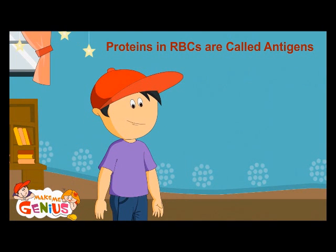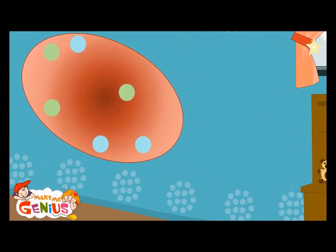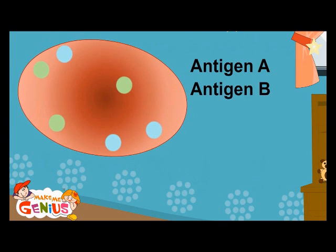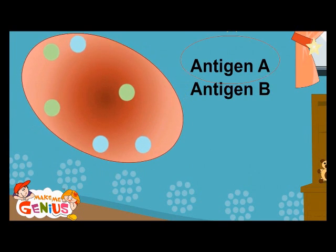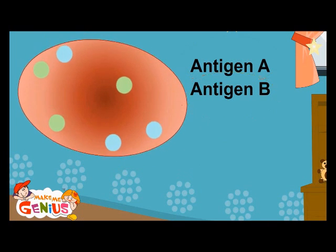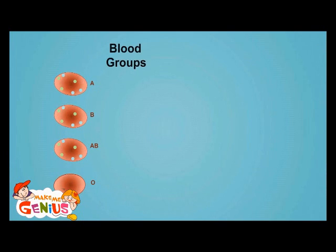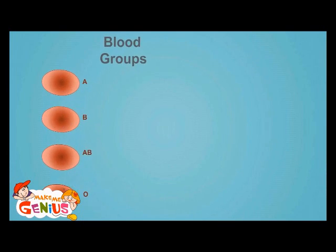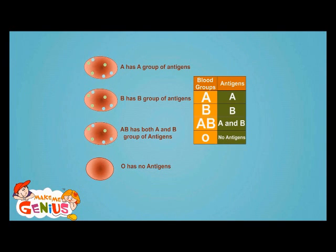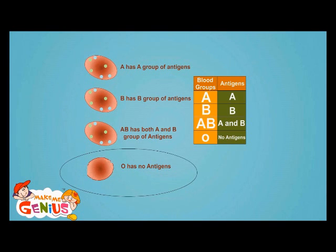Do we all have the same antigens? No, not all have the same antigens. There are two types, A and B. We have either blood with A antigens or blood with B antigens. But actually there are four types of blood. How? You said there are only two antigens, A and B. Yes, but there are a few people who don't have any antigens in RBCs. This is called zero-antigen blood, also called O-type.